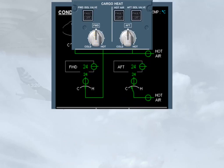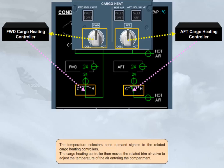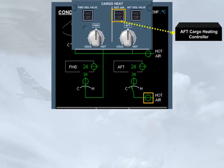The temperature selectors send demand signals to the related cargo heating controllers. The cargo heating controller then moves the related trim air valve to adjust the temperature of the air entering the compartment. The hot air push-button switch controls the aft cargo pressure regulating valve via the aft cargo heating controller, and normally remains in the lights-out auto position.